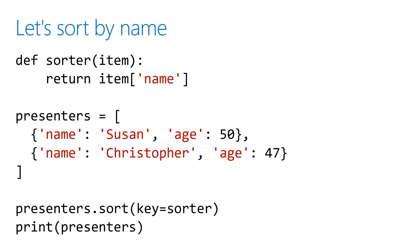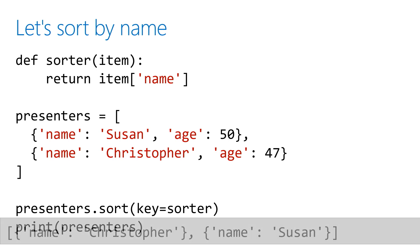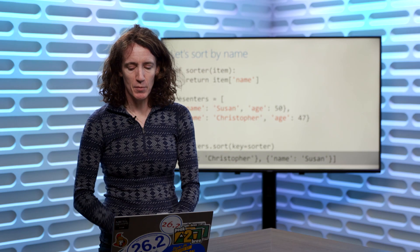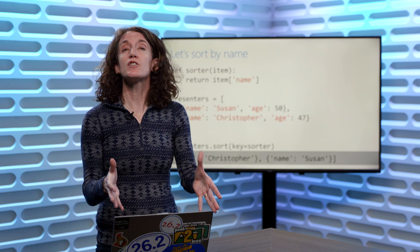Using the Python skills from the Intro to Programming with Python course, I could define a function. In this case, I've got a function called Sorter — you pass into it an item, which will be one of the items in our list, and it returns the item name. So if I want to sort by name, I can specify that this is the function that tells you what value to look at when sorting. We call presenters.sort with the Sorter function, and for each list item it returns the name, effectively sorting by name. When we run that code, it returns the list showing Christopher first and Susan second, because Christopher's name comes first in alphabetical order.